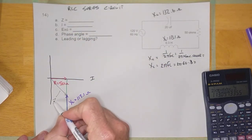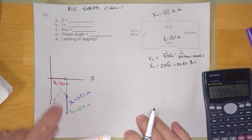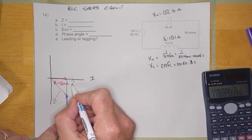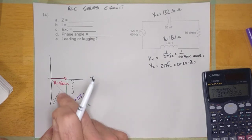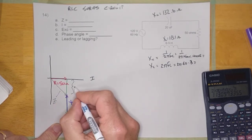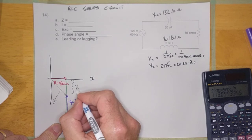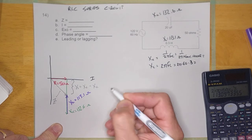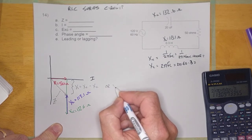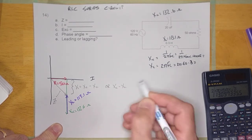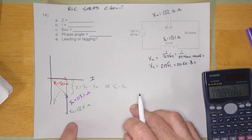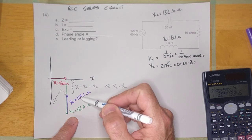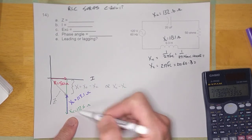That there is the impedance. Now I can calculate that, but the first thing I've got to do is figure out how long this green line is. We call that green line X. And X is equal to XL minus XC, or XC minus XL. You take the bigger number and subtract the smaller number.